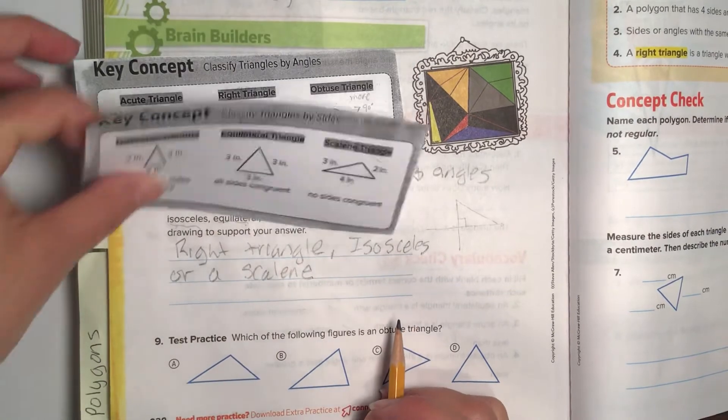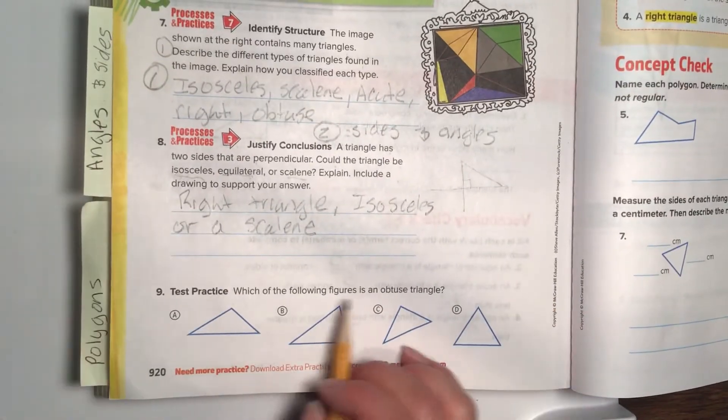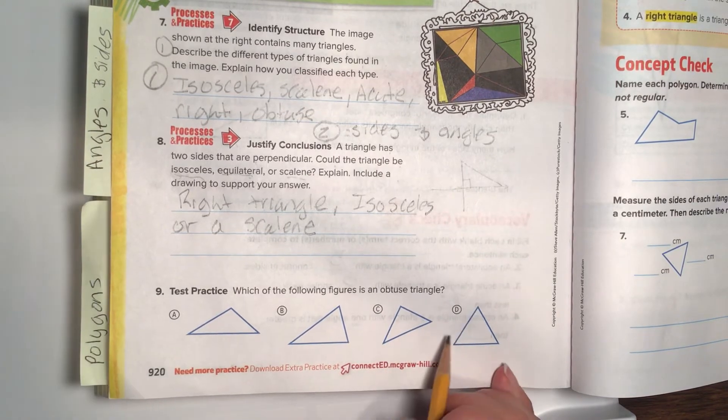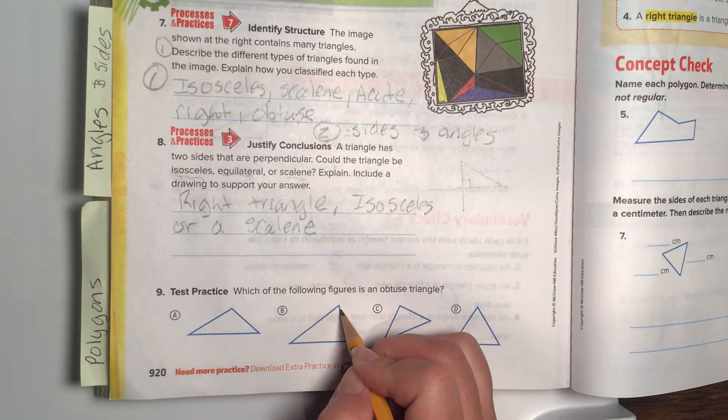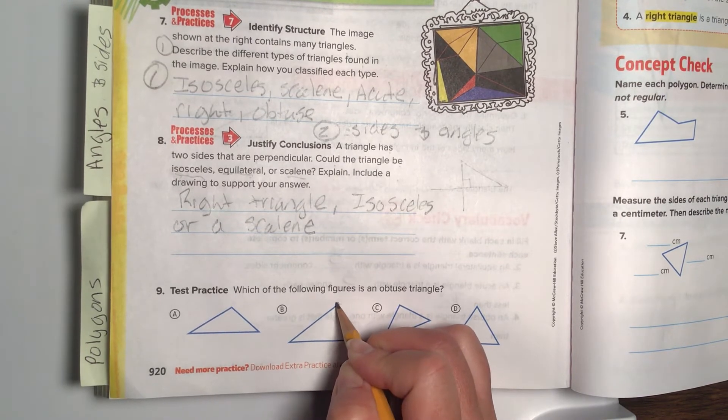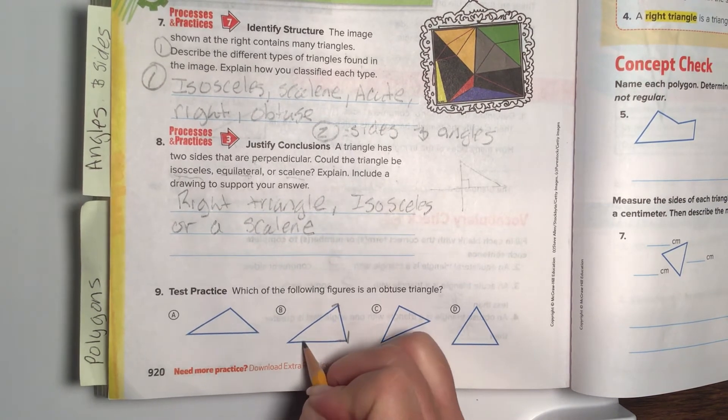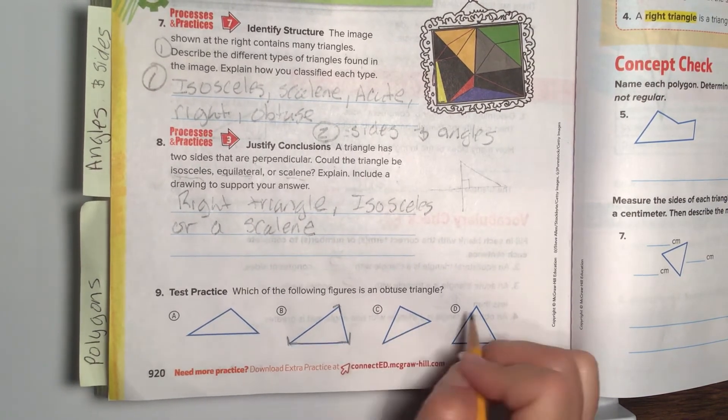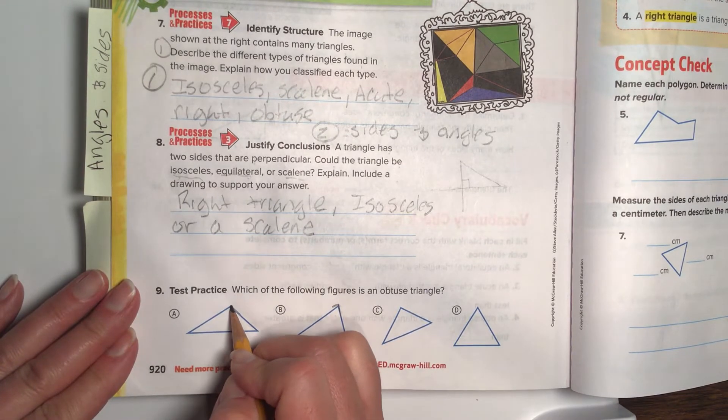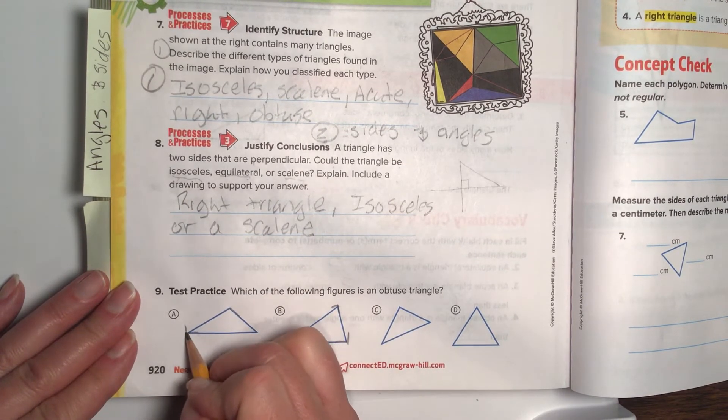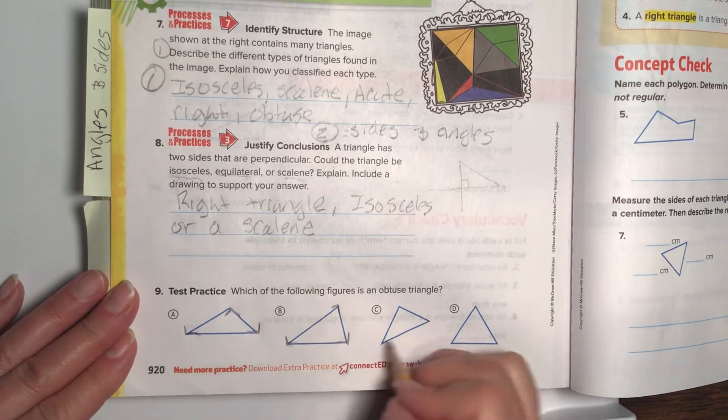All right, friends, let's move over to number nine. Which of the following figures is an obtuse triangle? Ooh, which one has a really wide angle? Let's do our little letter L's and figure out. Okay. That one's a little bit less. Okay. That one's an acute. Let's try this one. Ooh, that one is definitely obtuse.